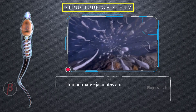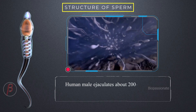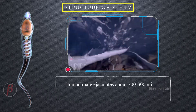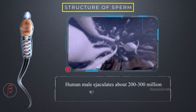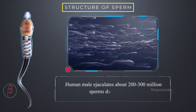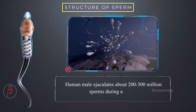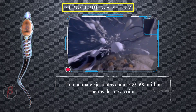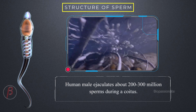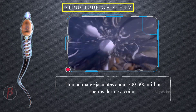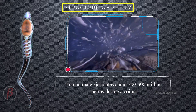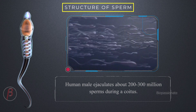For normal fertility, about 60 percent of the sperms must have normal shape and size, and at least 40 percent of them must show vigorous motility.